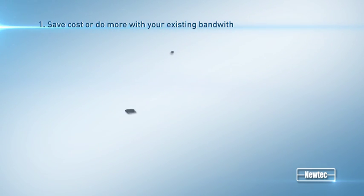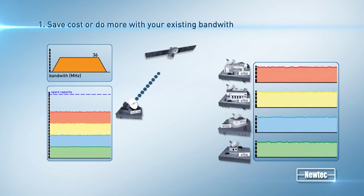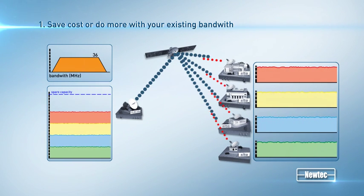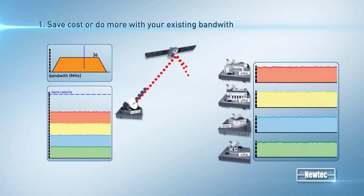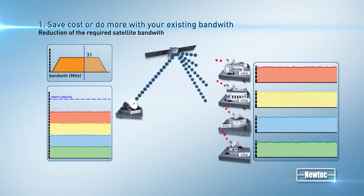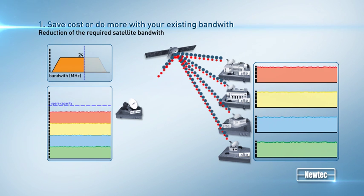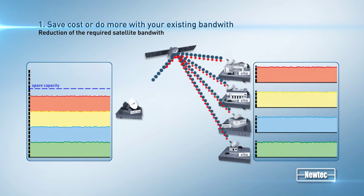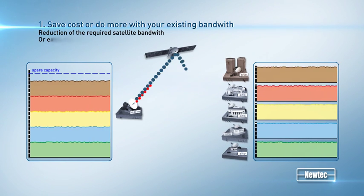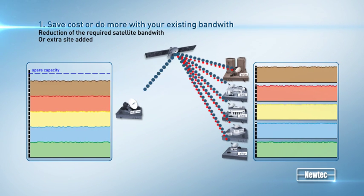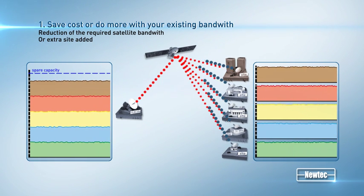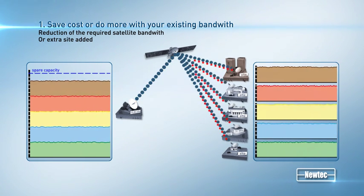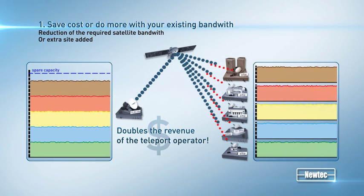Depending on the situation your company is faced with, FlexACM allows you to save cost on the satellite capacity, or allows you to do more with the same bandwidth on the satellite. IP trunking networks based on FlexACM technology doubles the revenue for the teleport operator.